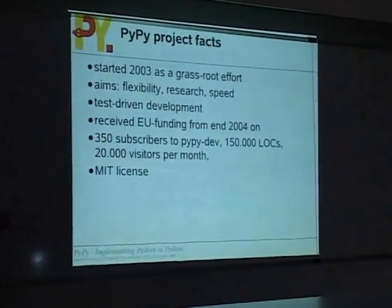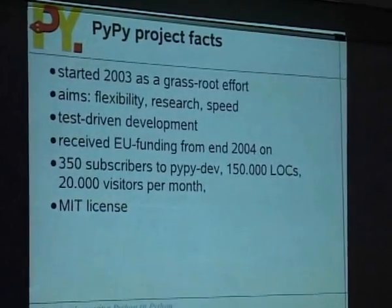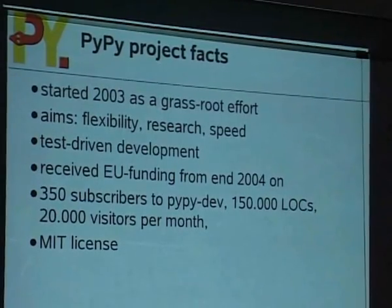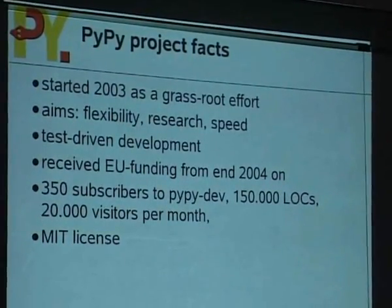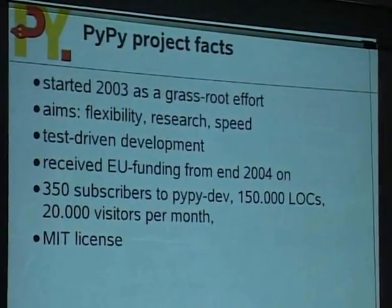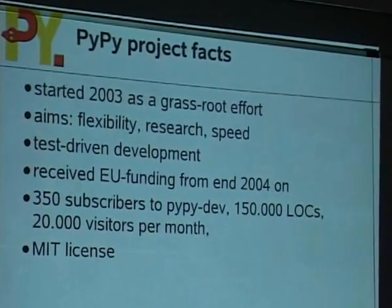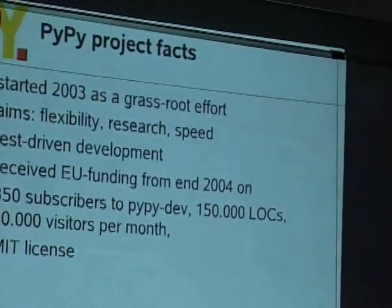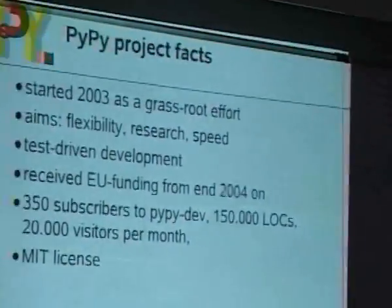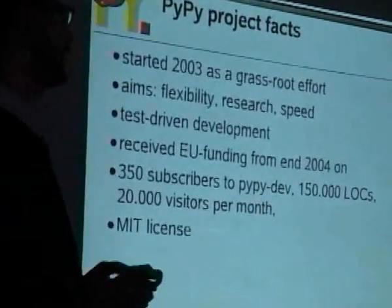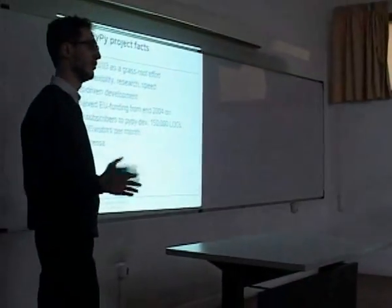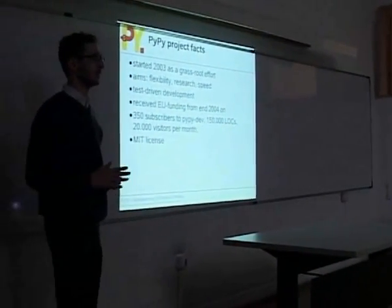Some facts about the project: it started as a grassroots open source effort in 2003, mostly initiated by people already involved in the Python community — mainly Armin Rigo, who will also give another part of the talk, Christian Tismer, and Oliver Krekel, who is not here. The project is mostly based in Europe, with not much involvement from the US side.